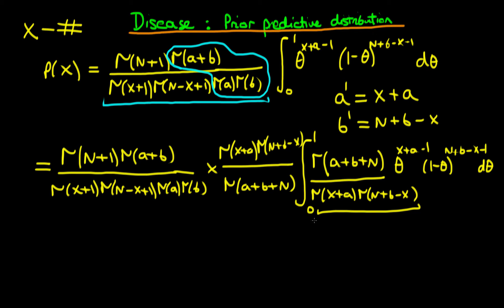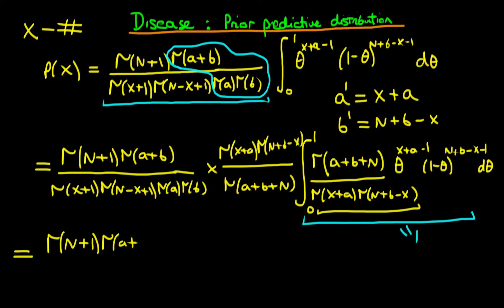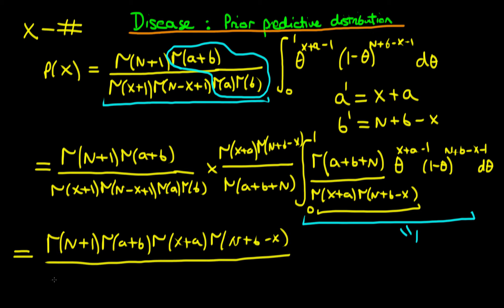That's just equivalent to multiplying through by one over that, so that's just the same as multiplying through by gamma of x plus a times gamma of n plus b minus x, divided through by gamma of a plus b plus n. Now it becomes apparent why we've actually created this beta distribution here, because a beta distribution is a valid probability distribution over the range of theta from naught to one. Hence, if I integrate this probability distribution from naught to one over all values of theta, this whole thing has to equal one. So that simplifies our expression enormously, because now we don't have the integral part of it. So then what we're just left with is everything before the integral sign: gamma of n plus one, times gamma of a plus b, times gamma of x plus a, times gamma of n plus b minus x, divided through by gamma of x plus one, gamma of n minus x plus one, times gamma of a, times gamma of b, times gamma of a plus b plus n.